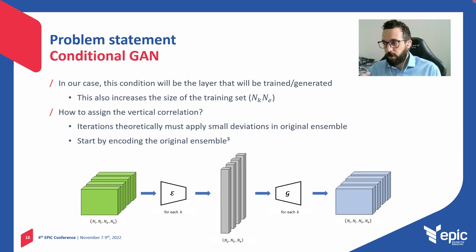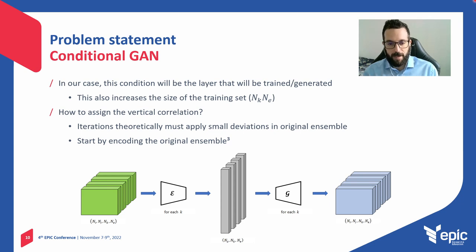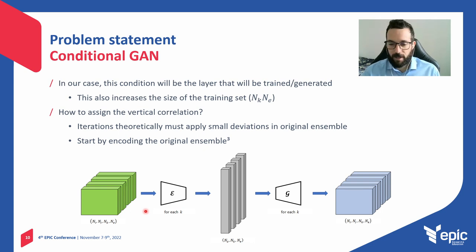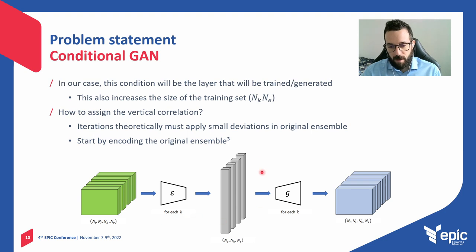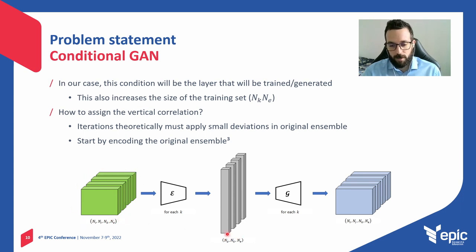The fact is that the iterations in data assimilation must apply only small deviations in the original ensemble. So, why not start by encoding the original ensemble? We have the original three-dimensional ensemble. After GAN training, we train an encoder with the generator weights fixed, and perform this mapping layer by layer. After applying the generator, this latent representation will result in exactly the initial reservoir — so we can conclude that the vertical correlation is maintained.